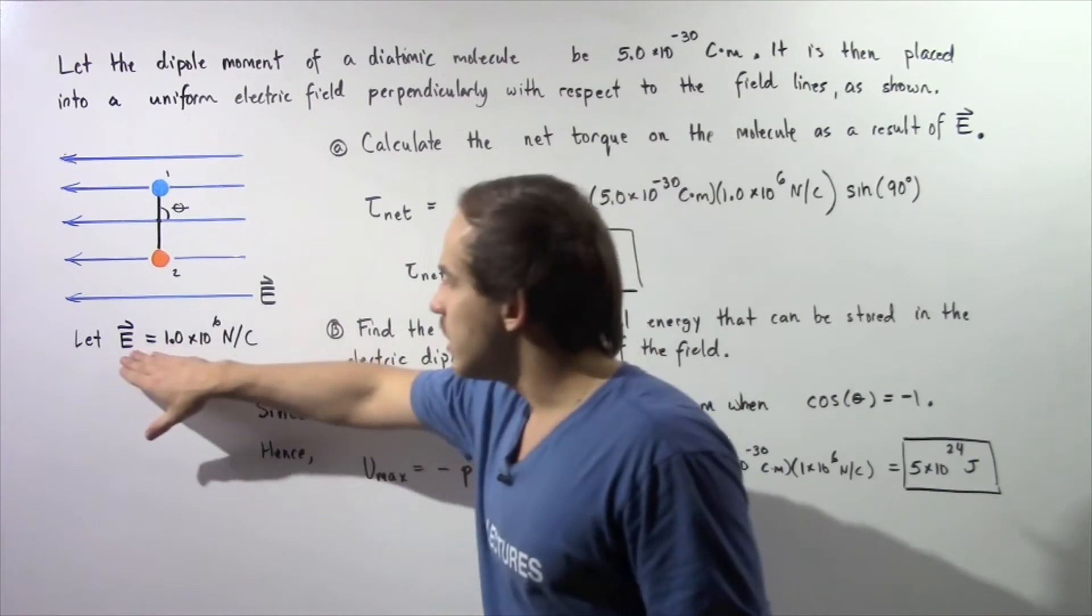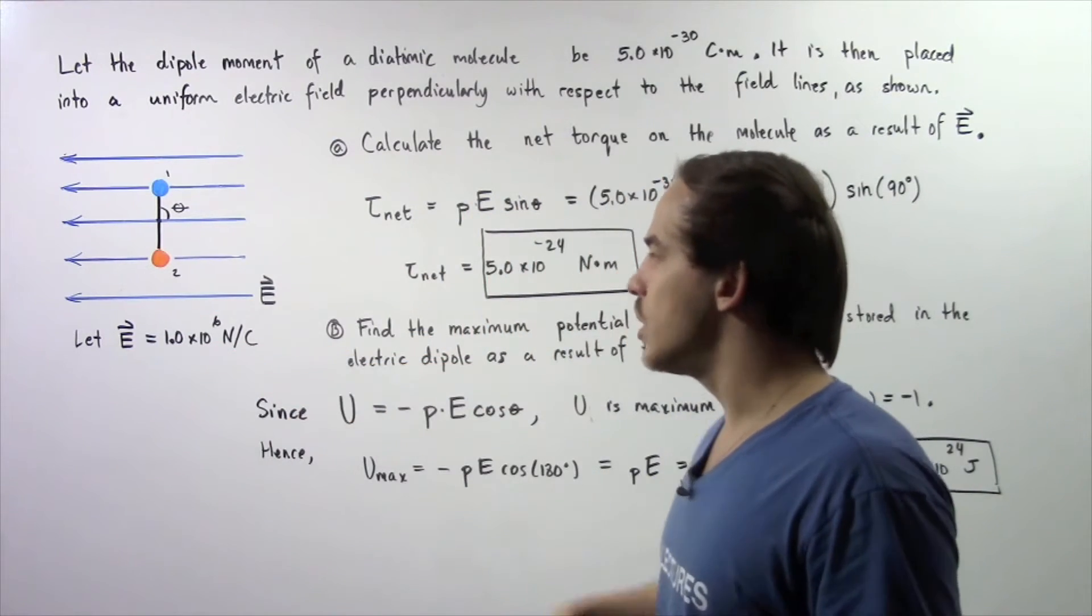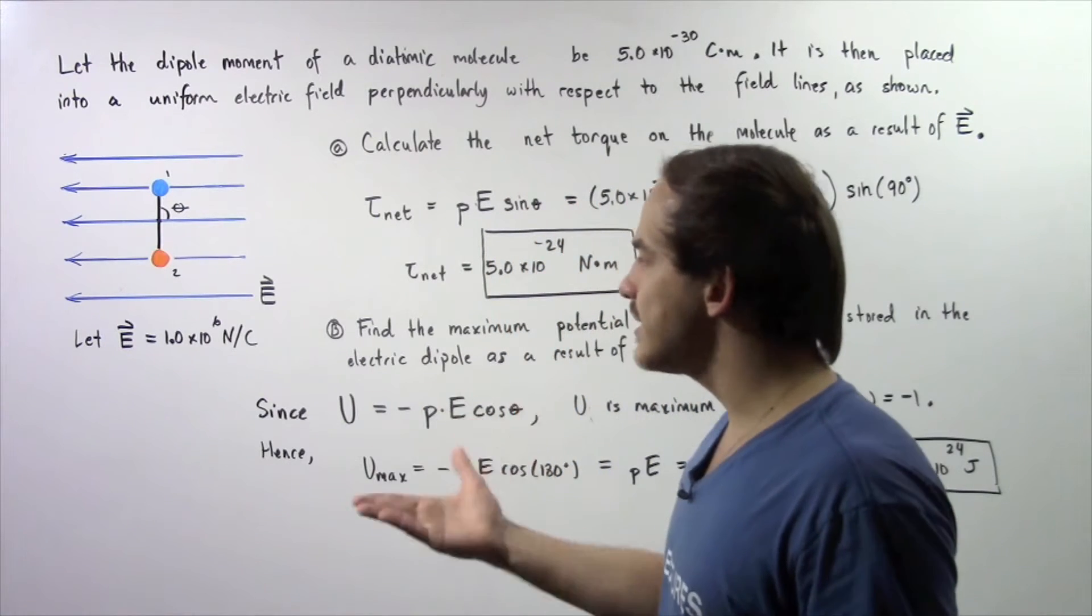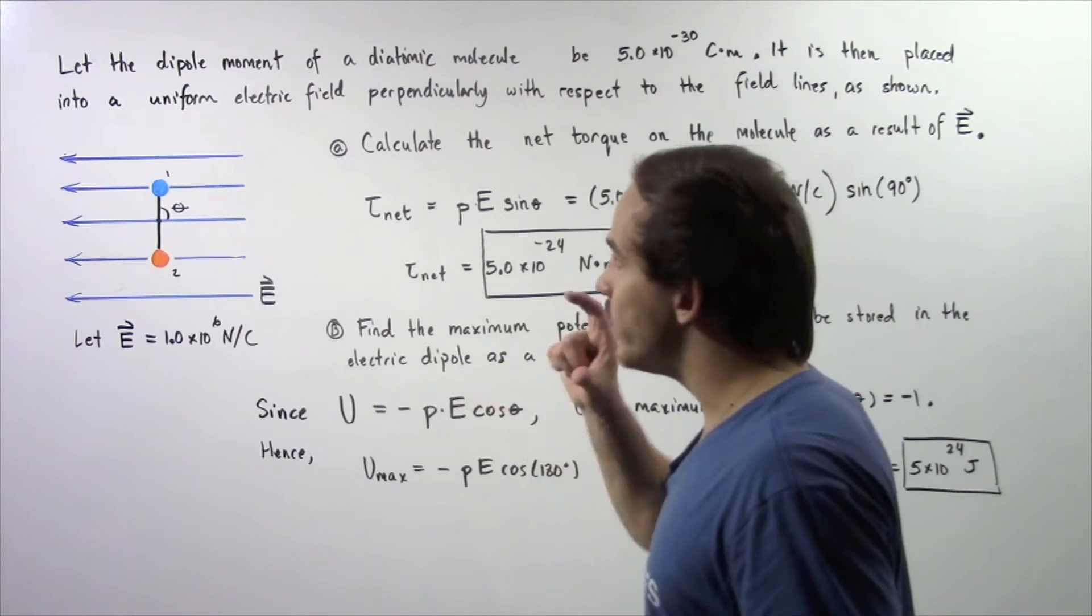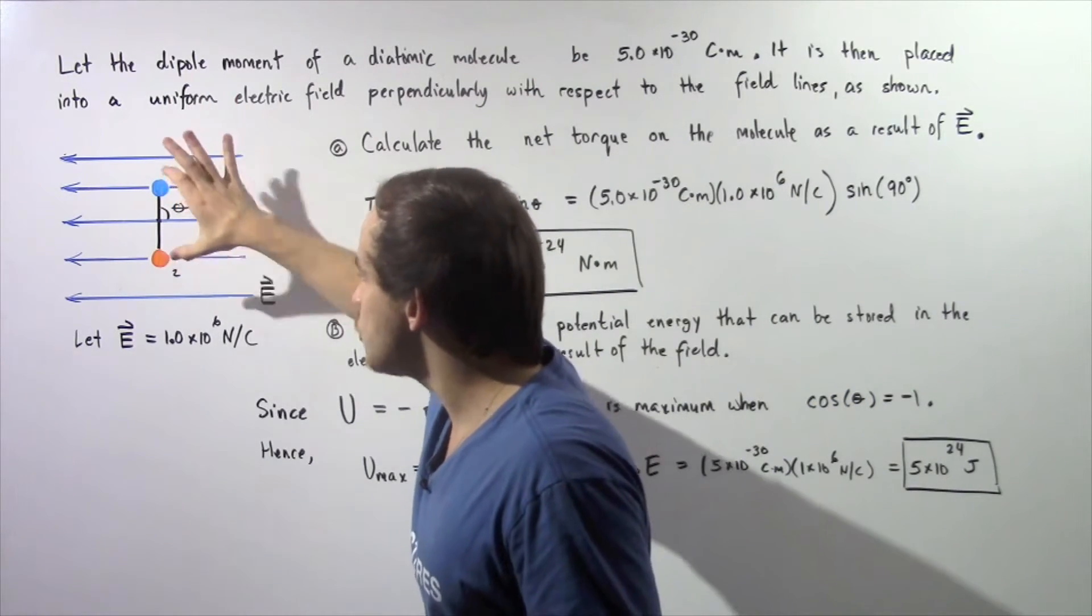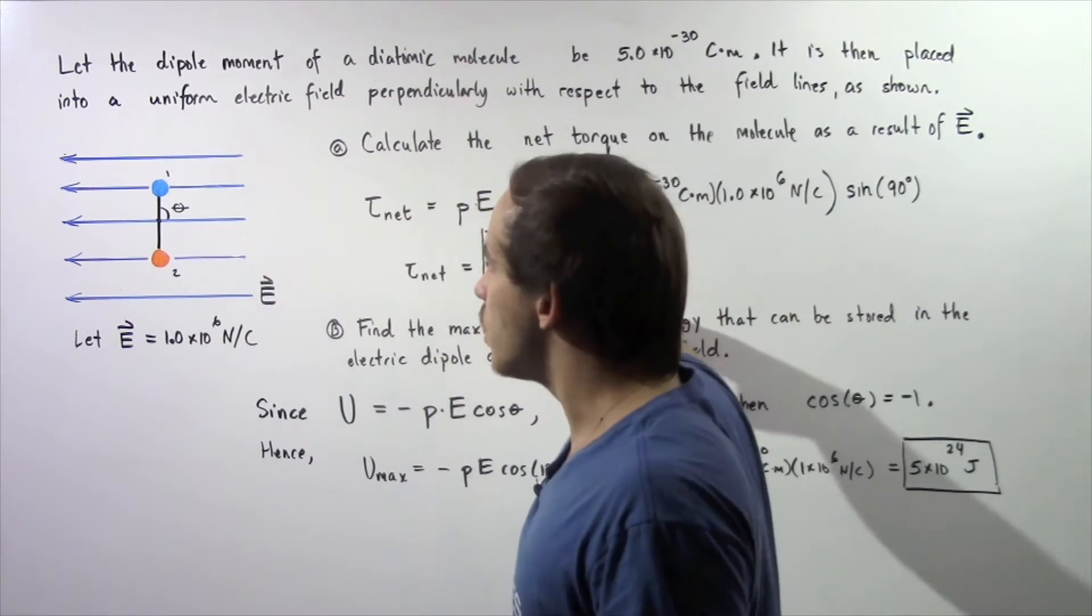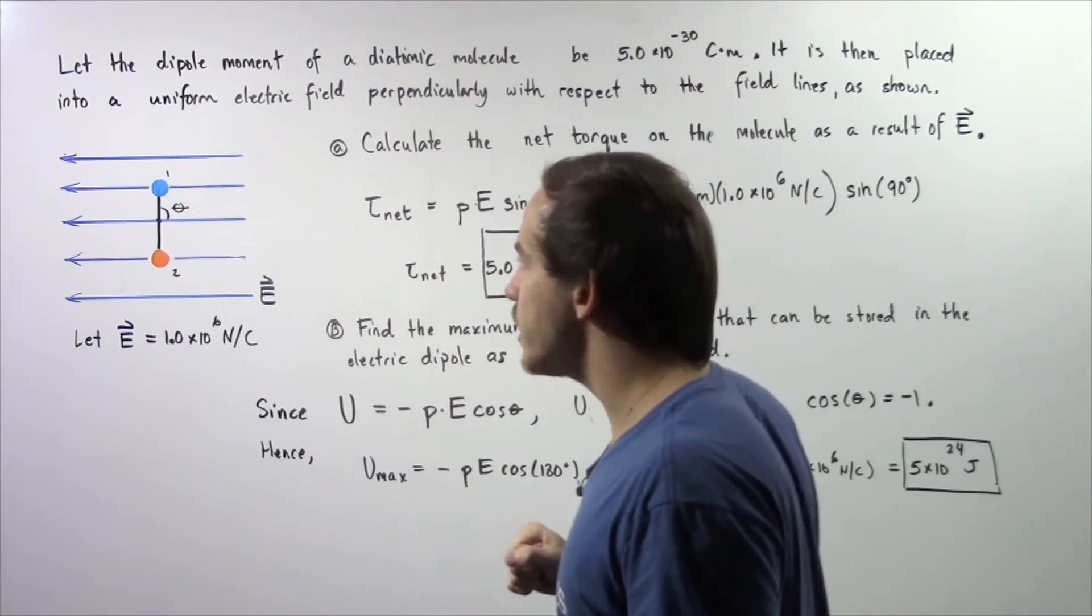Let's suppose the electric field is constant and it's given by this magnitude 1.0 times 10 to the 6 newtons per coulomb. So initially we take our dipole molecule and we place it into our field as shown, so that this angle with respect to the x axis is 90 degrees.